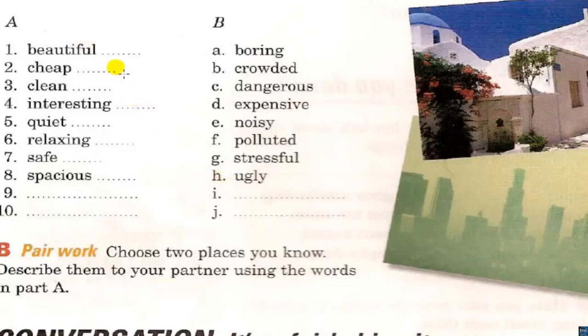Number 2: Cheap — opposite: Expensive. Answer: D. Number 3: Clean — opposite: Polluted. Answer: F.